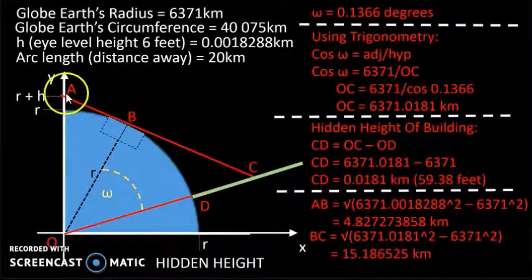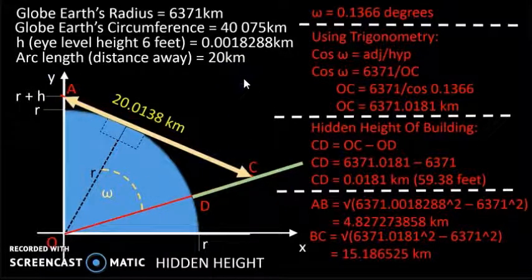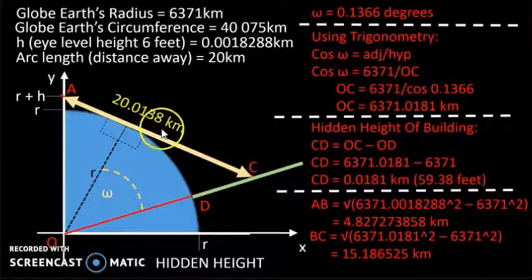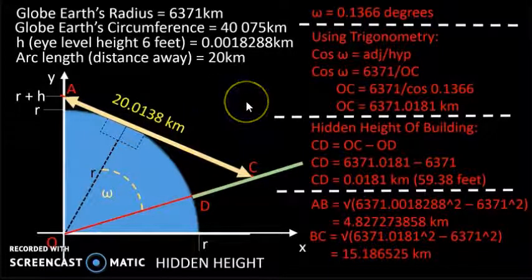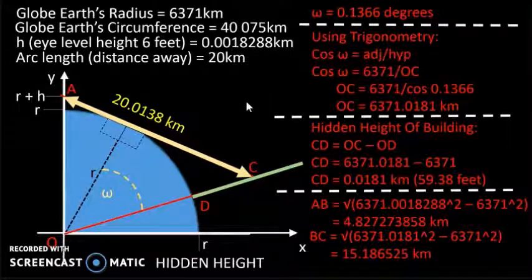So the total length AC is equal to 20.0138 kilometres.